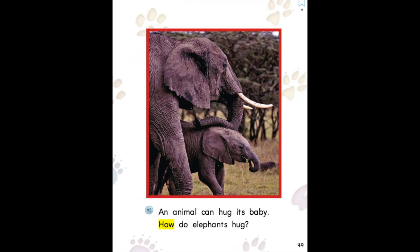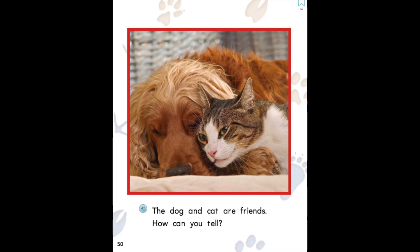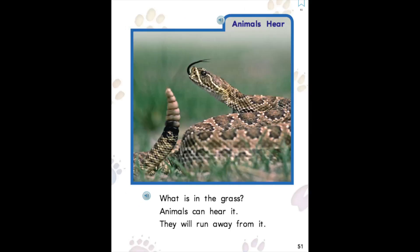An animal can hug its baby. How do elephants hug? The dog and cat are friends. How can you tell? What is in the grass? Animals can hear it. They will run away from it.